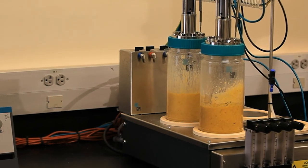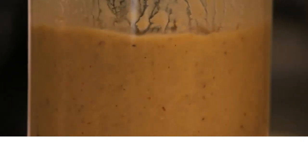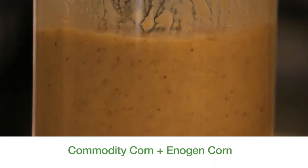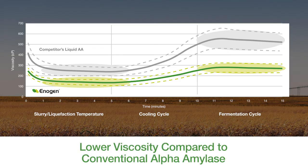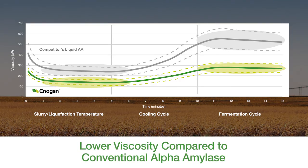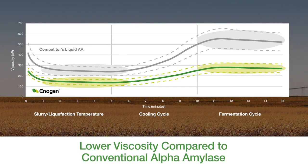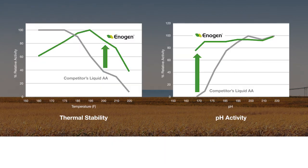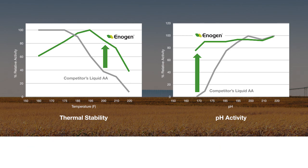Enogen goes beyond traditional liquid amylase, enabling plants to significantly reduce the viscosity of their corn mash. Enogen grain works over a broad range of pH and temperatures, facilitating an unprecedented break in viscosity through unique enzyme activity and unmatched dosage rates.